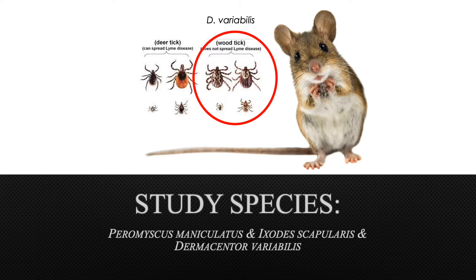Wood ticks currently have a larger geographic range than deer ticks in Ontario, and are known for carrying zoonotic diseases such as Rocky Mountain Spotted Fever, though this bacterial disease is not prevalent in Ontario compared to other provinces. Although at the larval and nymph stage the wood tick tends to prefer the same hosts that the deer tick does, adult wood ticks tend to feed on medium-sized mammals, such as raccoons, dogs, and coyotes, though they do often bite humans too.